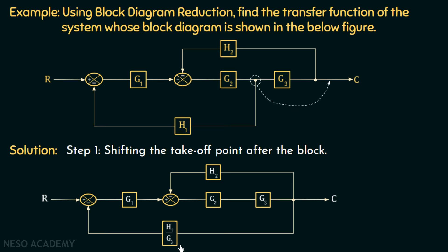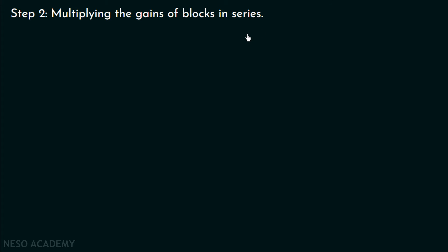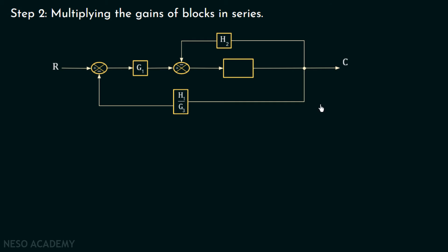These two blocks are now in series, so in step number 2 we will multiply their gains. Multiplying the gains of the blocks which are in series, we replace the two blocks with a single block whose gain is the product of the individual gains — G2 multiplied with G3.